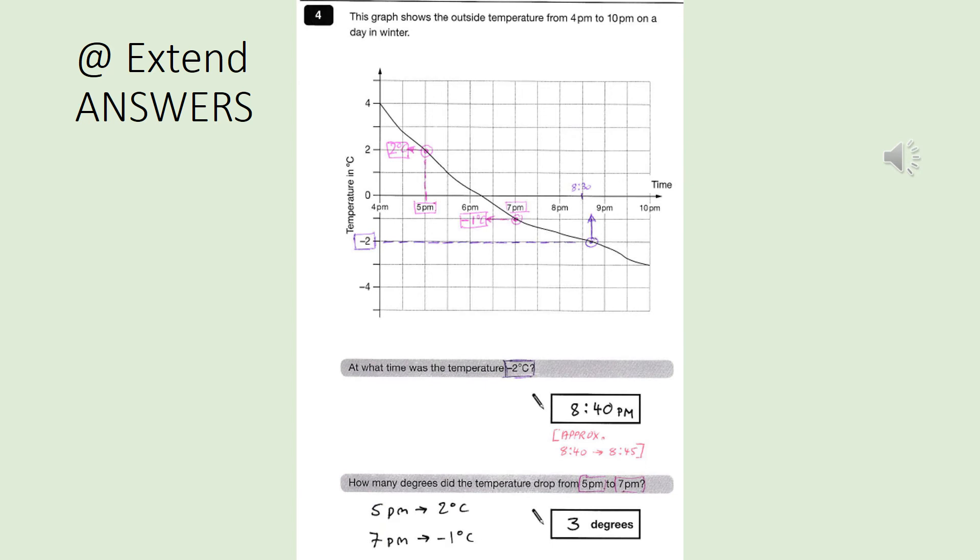OK, so at what time was the temperature minus 2 degrees? Well, I found minus 2 on the y-axis and found where the line meets that point, which if you look here, yes, I agree. Between 8 and 9, there's an interval, so that would be 8:30. So it's just after 8:30, so I would say around 8:40 p.m. Again, if you're a few minutes before or after, then that's fine as long as you're roughly there.